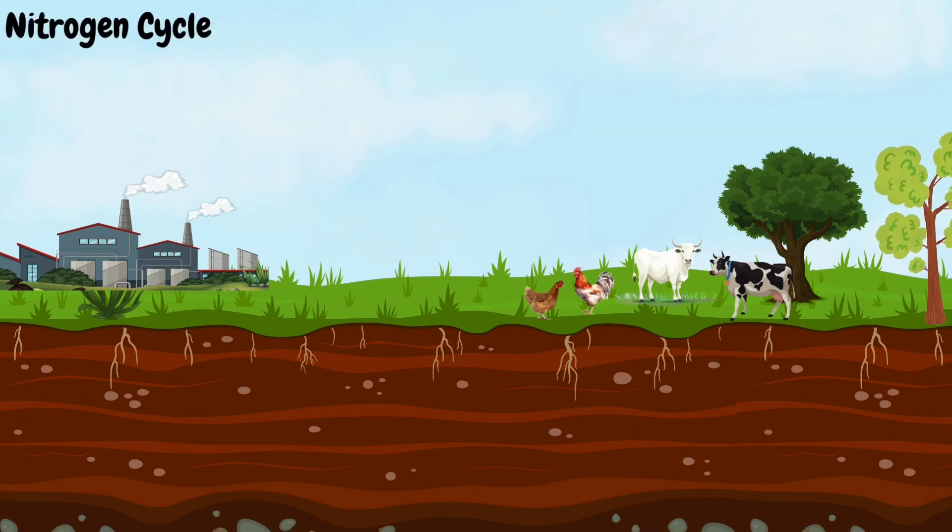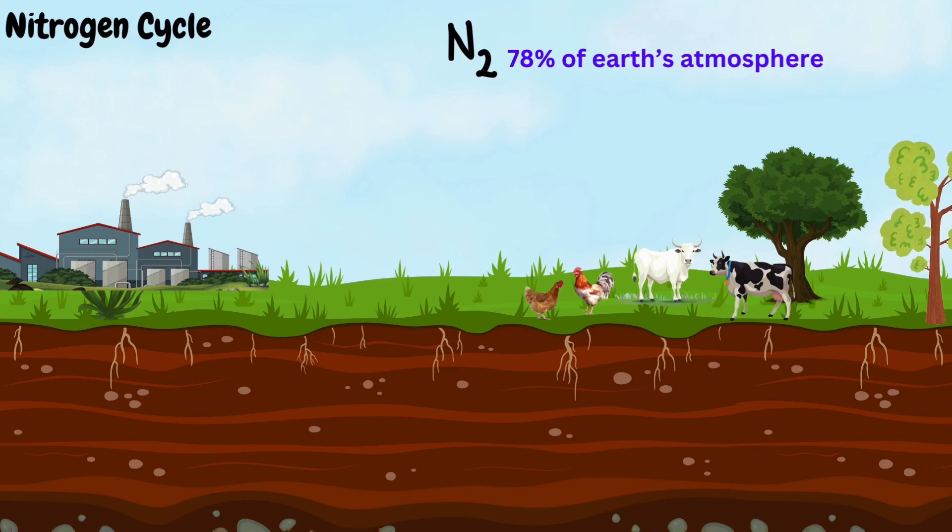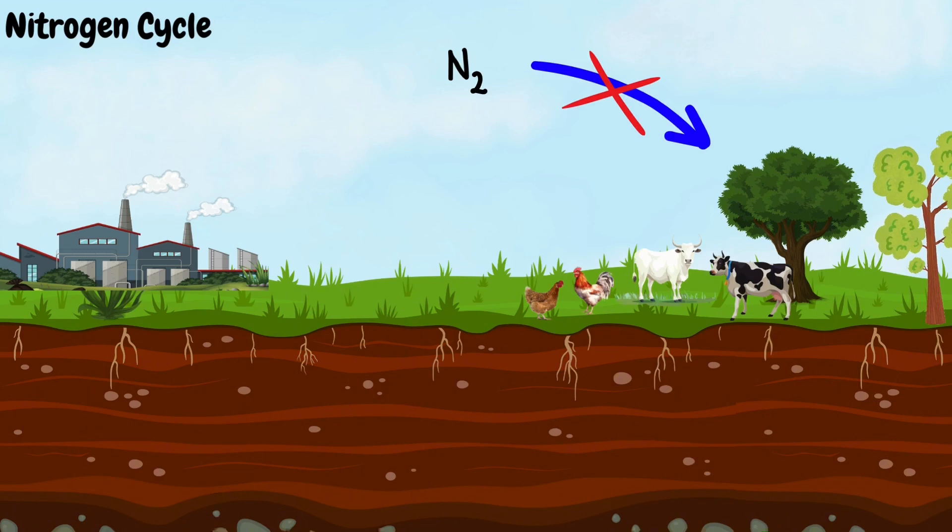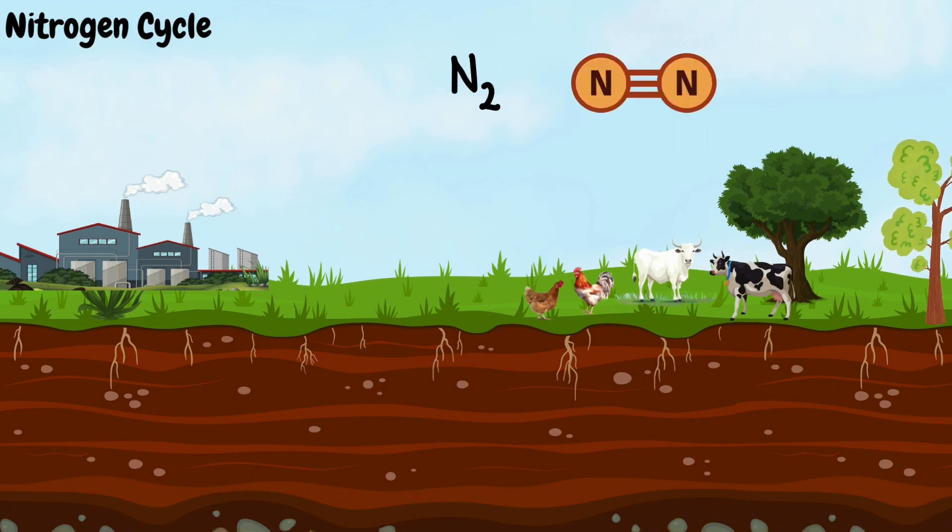Nitrogen exists in the atmosphere primarily as nitrogen gas, which makes up about 78% of the earth's atmosphere. However, most organisms cannot utilize atmospheric nitrogen directly, because there is a triple bond between the nitrogen atoms and it is difficult to break down within living organisms.